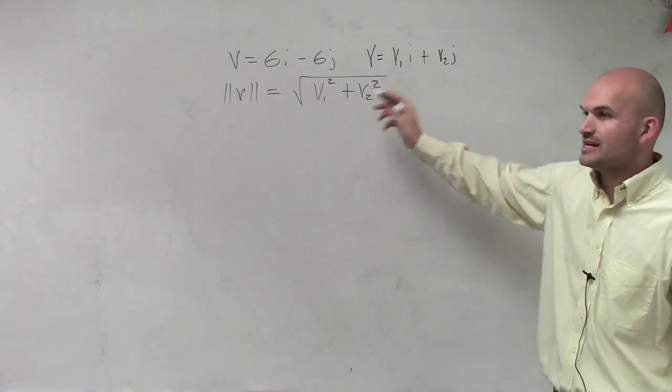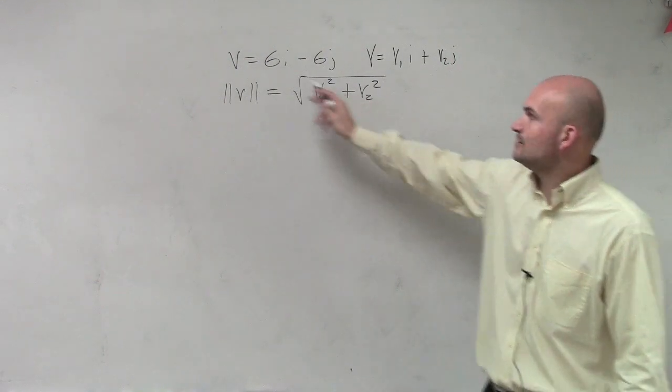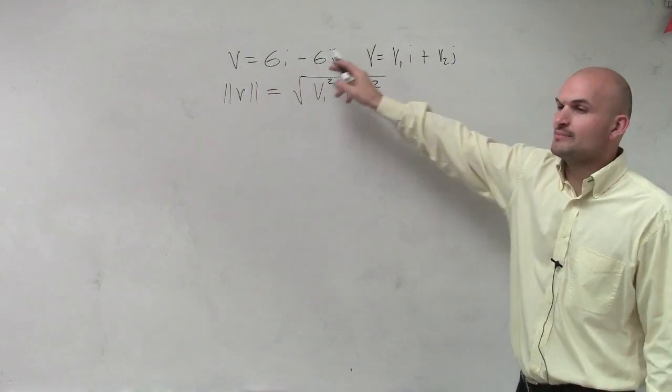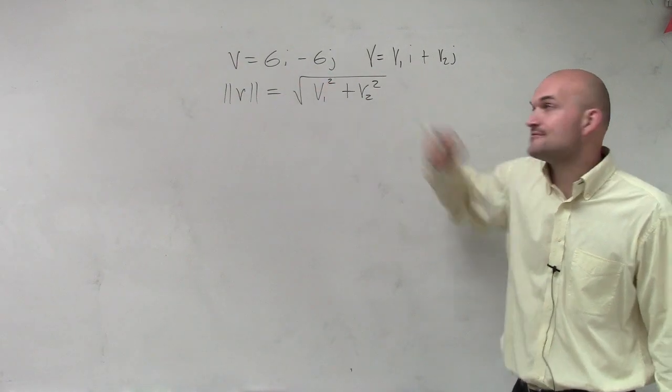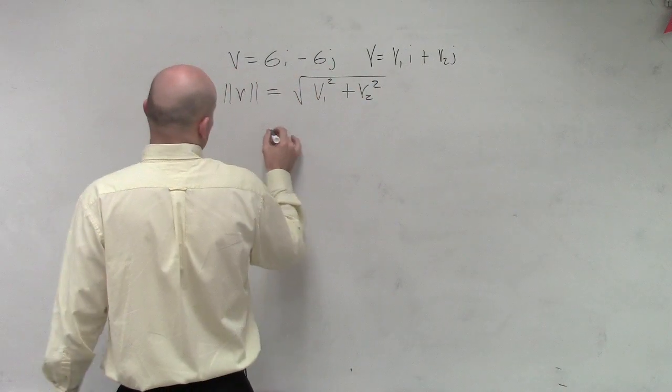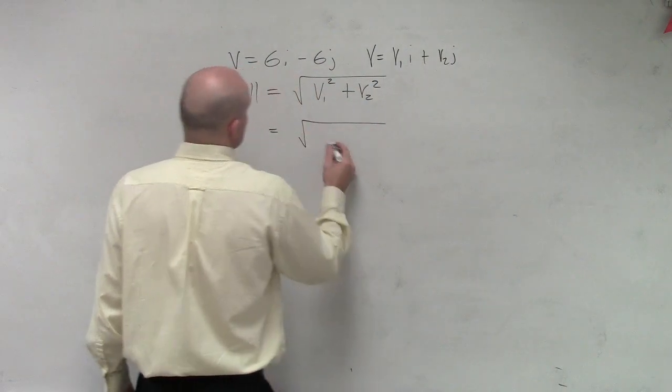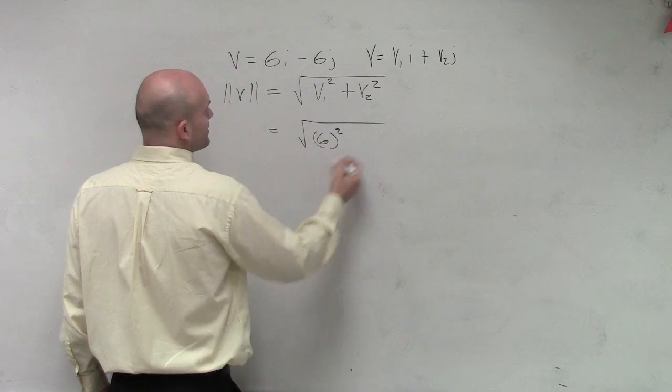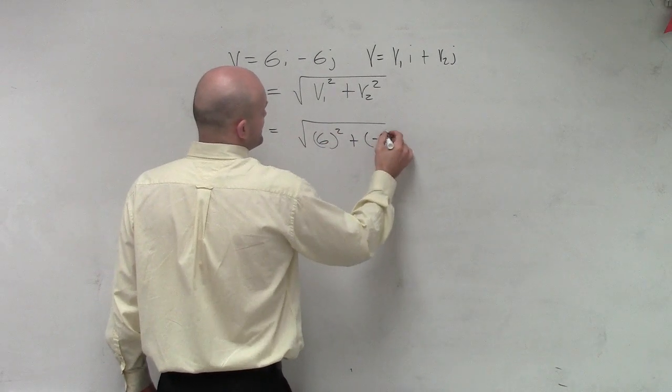So therefore, if I say what's my v1 and my v2, my v1 is the coefficient 6, and my v2 is my coefficient of j, which is negative 6. So therefore, I'm going to have square root of 6 squared plus negative 6 squared.